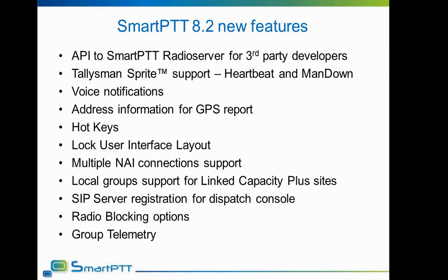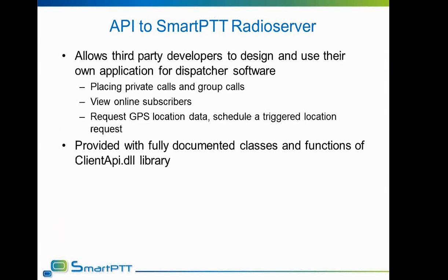The first feature to review is the API. The API is a software library that grants third-party developers access to the data kept by the SmartPTT radio server. The library contains all main classes needed for making calls, controlling the state of subscribers, and controlling the flow of data in the radio network. The functionality given by the API allows creation of fully functional dispatcher software based on SmartPTT radio server. All classes and functions are documented and included in the API documentation.